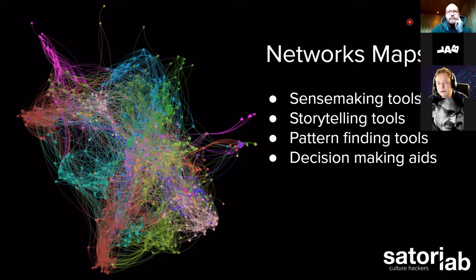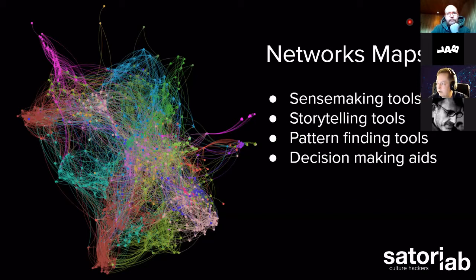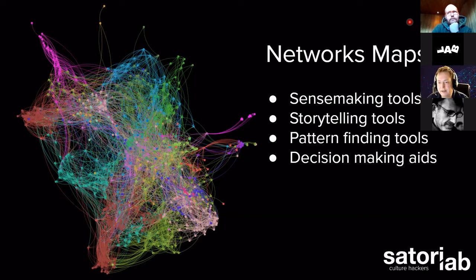These network maps are tools that can be used in a number of different ways. They're sense-making tools — they allow you to see things from which you can infer different patterns. They're also storytelling tools: once you understand what the lines mean and the data they represent, you can tell stories about what's going on in your organization. They're pattern-finding tools and decision-making aids — with one big caveat: never make a decision entirely based on what a network dataset is suggesting. It's a guide and a starting point, meant to reinforce your existing practice with better data.